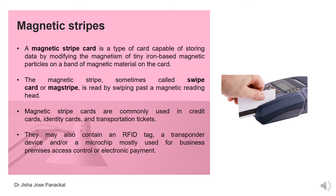It is a type of card capable of storing data by modifying the magnetism of tiny iron-based magnetic particles on a band of magnetic material on the card. This is the way how the information is stored inside this particular card.